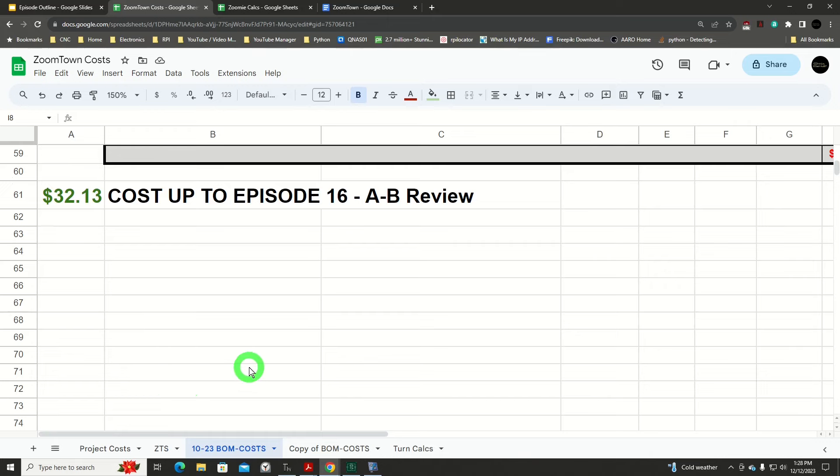At this point, our costs are up around $32.13. I'm sure there's a little bit of gray number in there until I get all completely done with this. But we've got to remember that we've got to multiply that times 16, because I think that'll be the maximum number of Zoomies I'll have running around on the track, or Zoomtown, when we get to that stage.